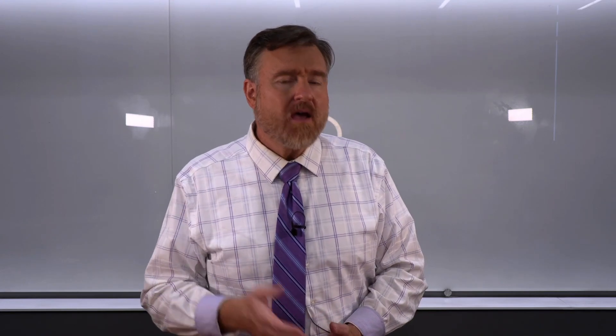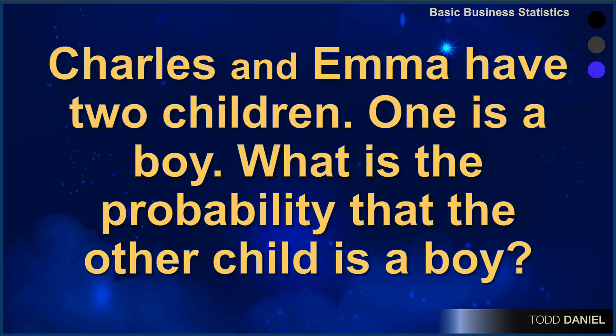For example, Charles and Emma have two children. One is a boy. What is the probability that the other child is a boy? Now already you know this is a silly question. Everybody knows that the probability of that second child being a boy is 50%. We don't need any math to solve this problem. And this is where conditional probability can get you.